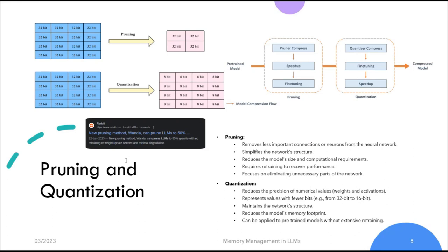Pruning involves removing certain connections — like weights or neurons — from a neural network. The goal is to identify and remove less important parameters, effectively simplifying the network's architecture. This is typically done based on criteria like weight magnitude: smaller or less influential weights are pruned, leaving a sparse network behind. Pruning results in fewer parameters, requiring less memory and leading to smaller model sizes and reduced computational requirements, though it may require retraining to recover some performance.